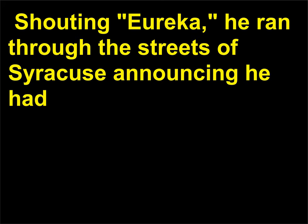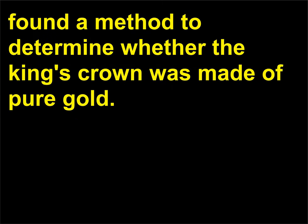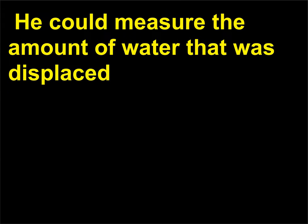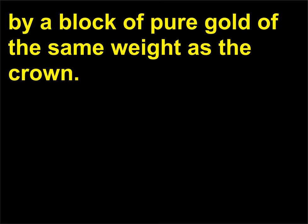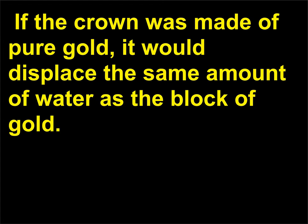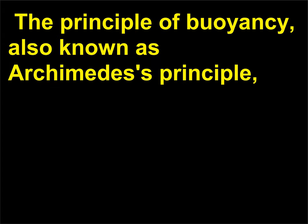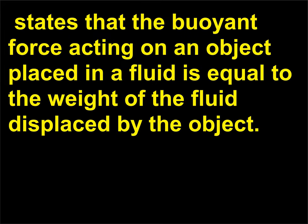Shouting 'Eureka,' he ran through the streets of Syracuse announcing he had found a method to determine whether the king's crown was made of pure gold. He could measure the amount of water displaced by a block of pure gold of the same weight as the crown — if the crown was made of pure gold, it would displace the same amount of water as the block of gold. The principle of buoyancy, also known as Archimedes's principle, states that the buoyant force acting on an object placed in a fluid is equal to the weight of the fluid displaced by the object.